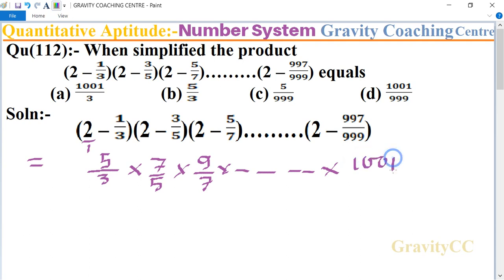1001 upon 999. So here 5 is cancelled by 5, 7 by 7 cancel, and 9 and this part...